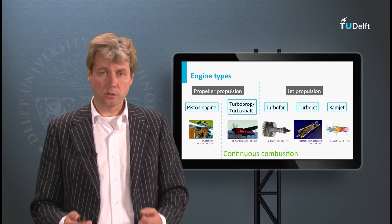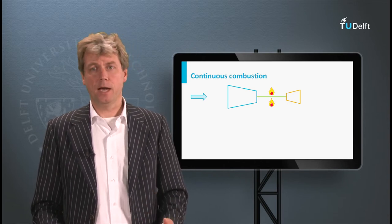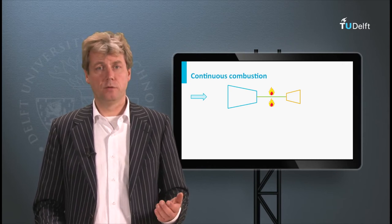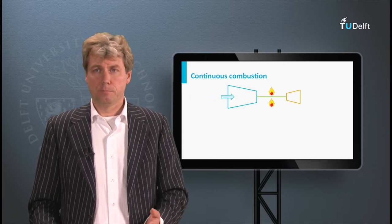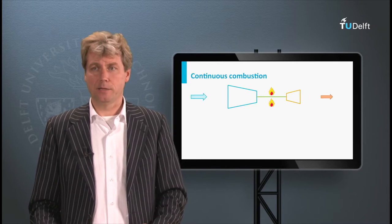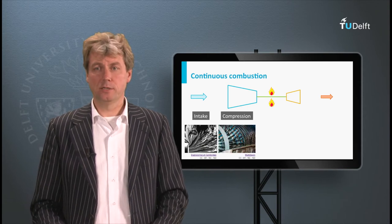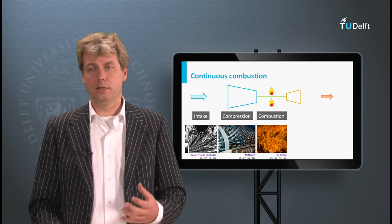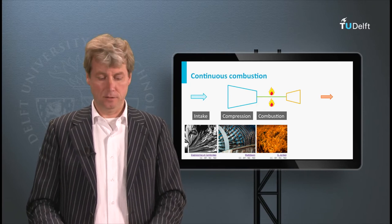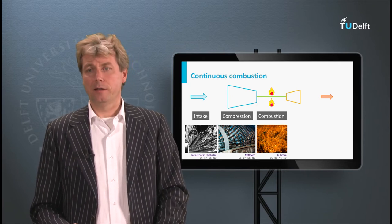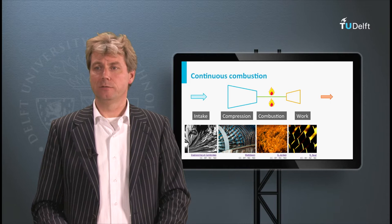Continuous combustion refers to the fact that there are no specific strokes or cycles. Instead, the air basically goes through the different phases from left to right in the diagram — from intake to exhaust. The air passes through, is compressed, heated, and expands again. You can still see all the cycles known from piston engines: intake, then the air is compressed by a successive number of compression blades, then heated in the combustion chamber, and at higher temperature it expands and does its work, leaving the engine via the exhaust.